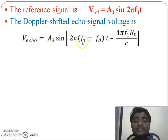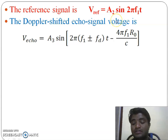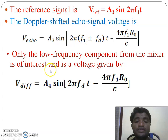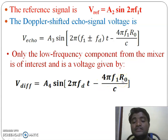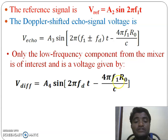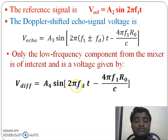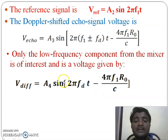Since F1 and F1 cancel out, the difference signal is A4 sine(2π FD t − 4π F1 R0 / C). This is the signal coming from the receiver mixer. If the target is stationary, there is no Doppler frequency shift, meaning FD = 0. With FD = 0, the term 2π FD t becomes zero, leaving only the constant phase term −4π F1 R0 / C. Therefore, for stationary targets the amplitude is constant.